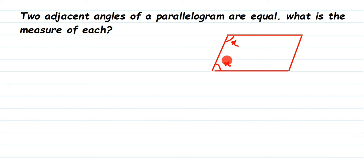We know that the sum of adjacent angles in a parallelogram is equal to 180 degrees. Using that property, we can write x plus x is equal to 180 degrees. This is because it's a property of a parallelogram that any two adjacent angles always add up to 180 degrees.